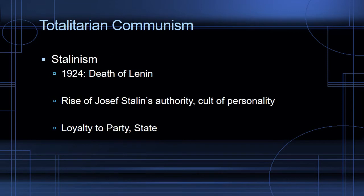In 1924, Lenin dies and Joseph Stalin begins to rise in authority, eventually becoming the dominant figure for a couple of decades in Russia, ruling through authoritarian control and a cult of personality. In Stalin, we see the importance of loyalty to the party and state — what many would call a betrayal of essential Marxist ideals. Marx's ideal was that the state would wither away, but with totalitarian communism the party and state become the ultimate authority, paralleling in some ways the rise of fascism in Italy and Germany.